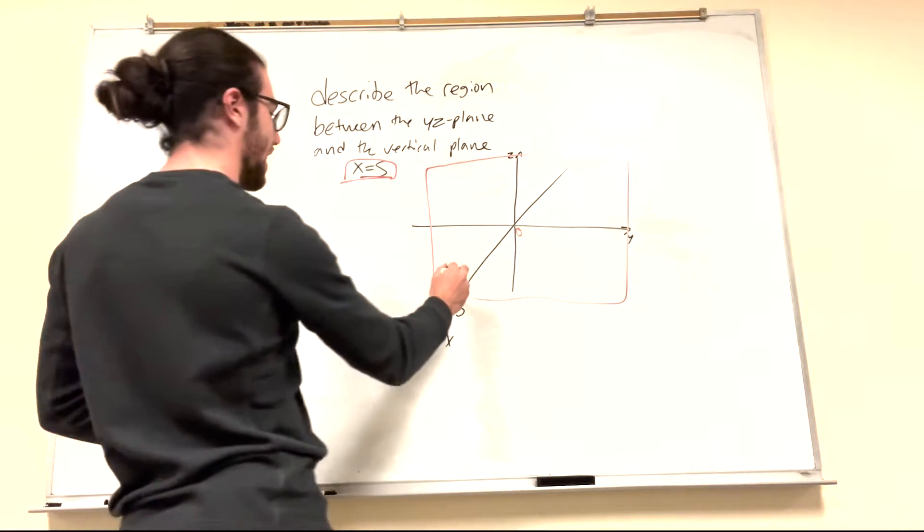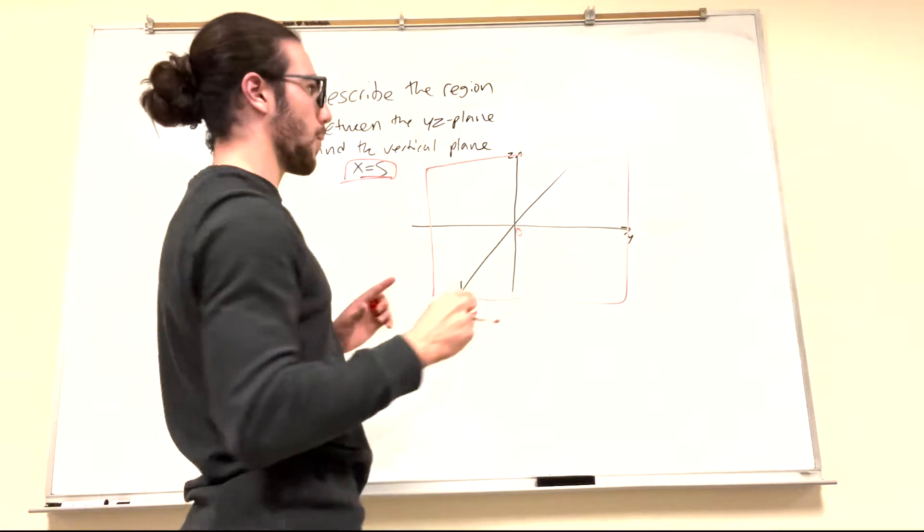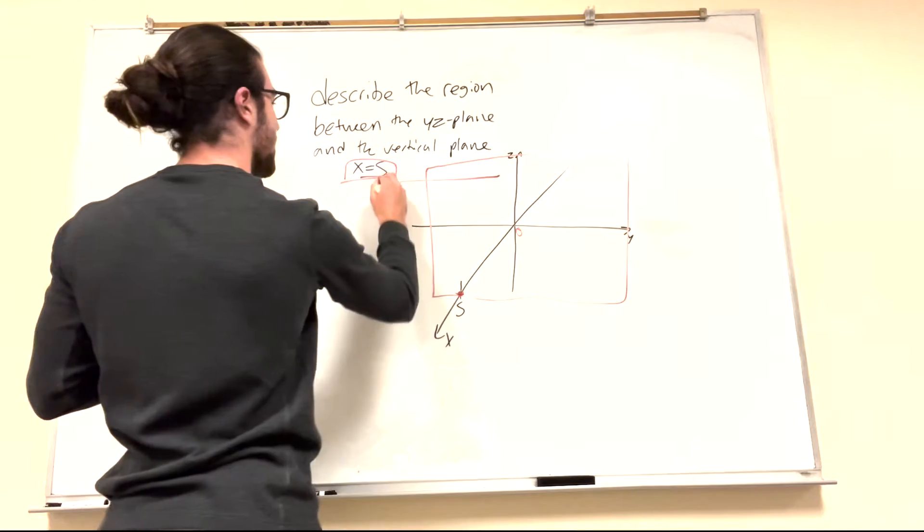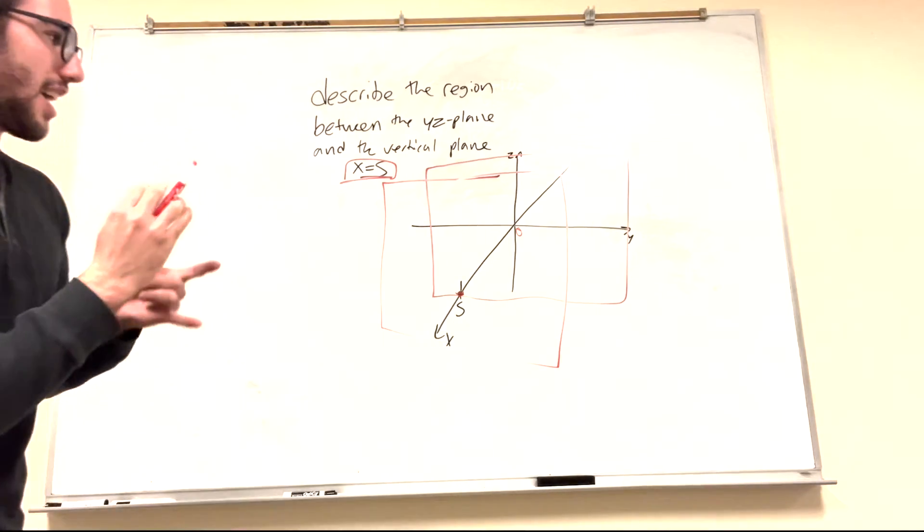That creates another plane here. x equals 5 means there's going to be another plane where y and z can be anything, but limited to where x is equal to 5. So it's going to look something like this. That goes on forever. I'm just constraining it.